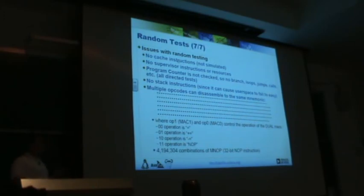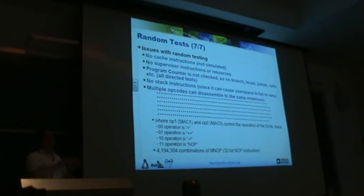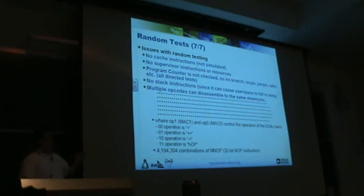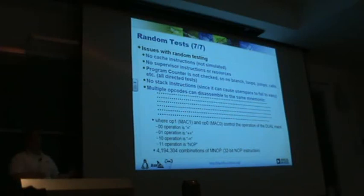Some of the issues with random testing: because we're testing the simulator on an ISS, there's no cache — we don't model the cache — so we can't test the side effects of a cache flush or I-flush on the hardware versus the simulator. There are no supervisor instructions or resources tested, because we're testing on the Linux user-space side. We don't check program counters, so we don't get to check branches, loops, jumps, calls, etc. — those are mainly covered by directed tests. There's no stack testing either, because randomly manipulating the stack and writing different data to it can cause no end of grief.